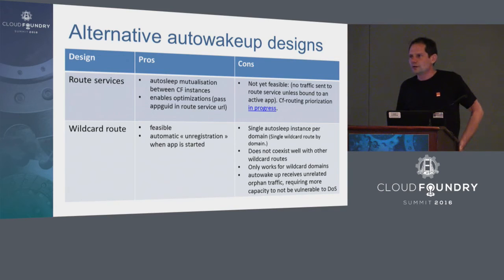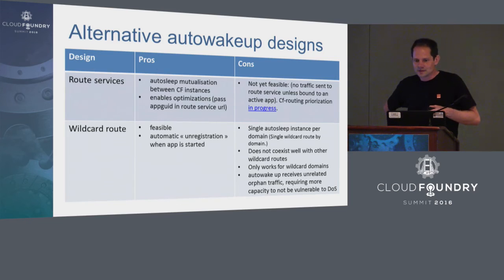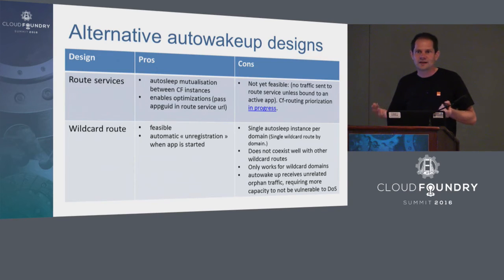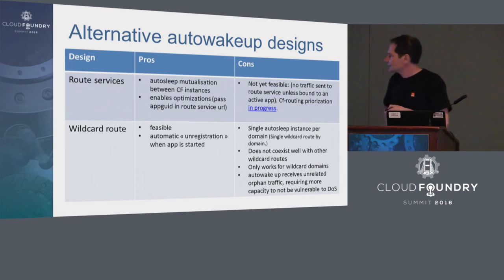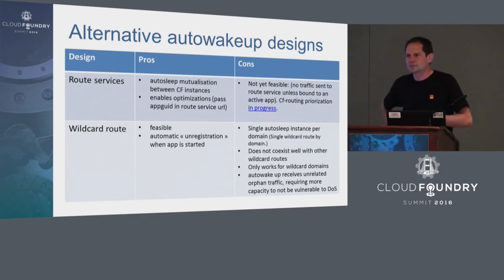Originally we were designing to use route services instead of the wildcard proxy — you might have seen that in the session abstract. Unfortunately we discovered a bit late that it's not feasible currently: route services don't receive traffic when they are mapped to a stopped app. There was a discussion with Shannon, the PM of the routing project, to explain this. If you have a similar use case, please voice it to Shannon so it can help with prioritization — it's not yet in the roadmap but could help other use cases. Wildcard route is feasible for now — not ideal, but working until we get this feature prioritized.